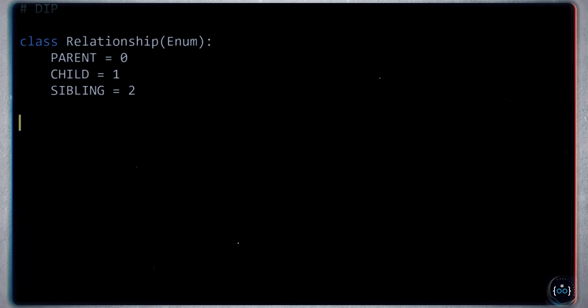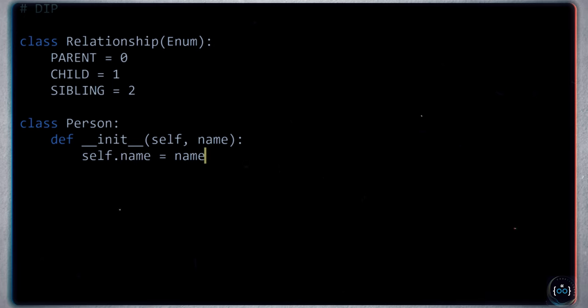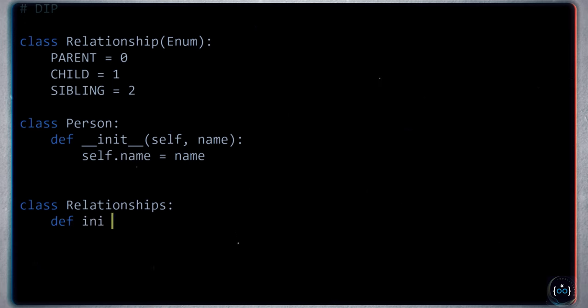Let me show you an example. We're doing genealogy research. I'll have a Relationship enum with values like parent, child, and sibling. Then a Person class with a simple initializer storing the name. We need a low-level module for storing relationships between people — a class called Relationships with a relations list initialized as empty. We add an add_parent_and_child method that appends tuples: (parent, Relationship.PARENT, child) and also the inverse (child, Relationship.CHILD, parent).